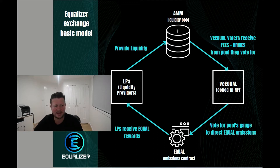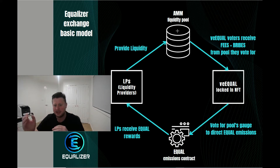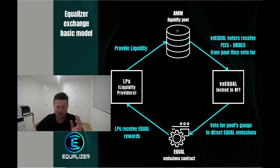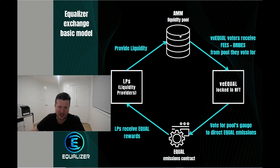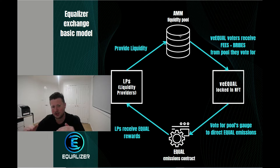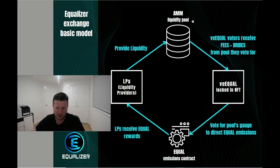So someone comes in and they might have some ETH and they want to swap it for USDC. It goes into the pool, it swaps depending on whether you want ETH or USDC, and then the pool gets changed — the calculations and the pricing change — and it keeps that equilibrium in the pool so that you effectively get your price out of there and get the swap you want.